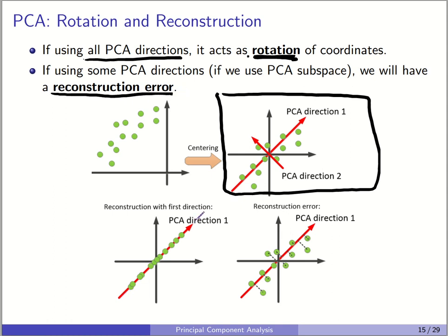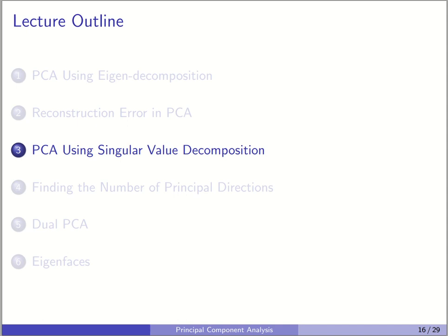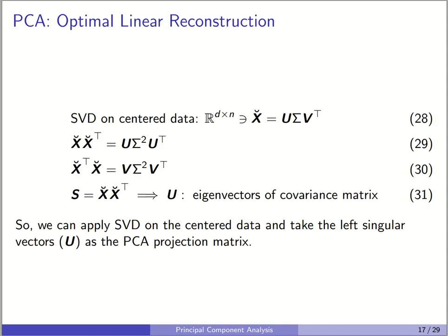Now let's go to dual PCA. Consider the SVD of X-breve as before: X-breve = U * sigma * V-transpose. The projection of data was U-transpose * X-breve. If we replace X-breve with its SVD, U-transpose * U = I (since U is orthogonal), so the projected data becomes sigma * V-transpose. For reconstruction, right-multiplying X-breve = U*sigma*V-transpose by V gives X-breve*V = U*sigma (since V-transpose*V = I). Right-multiplying by sigma-inverse gives U = X-breve * V * sigma-inverse (equation 34).